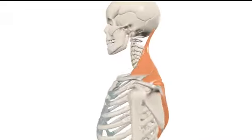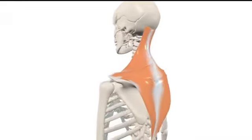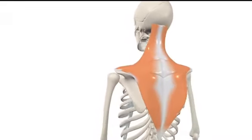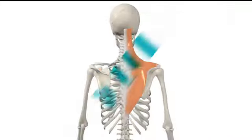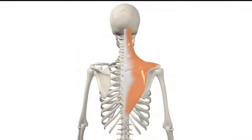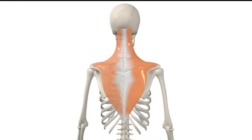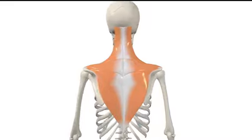In this video, we're going to talk about the anatomy and function of the trapezius muscle. The trapezius is a flat triangular muscle covering the upper and back part of the neck and the shoulders. Together, the left and right trapezius make a trapezoid shape, giving the muscle its name.